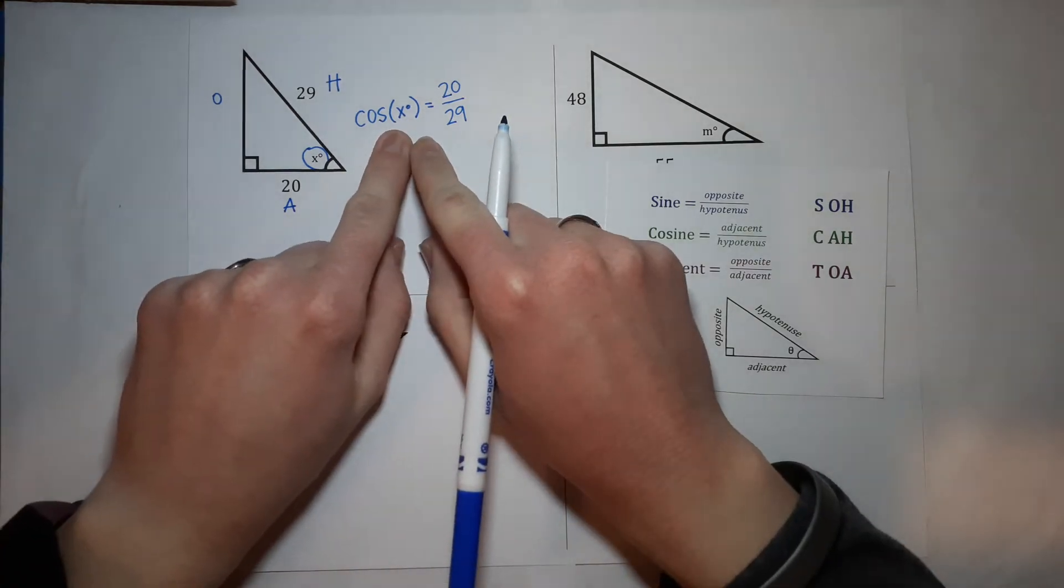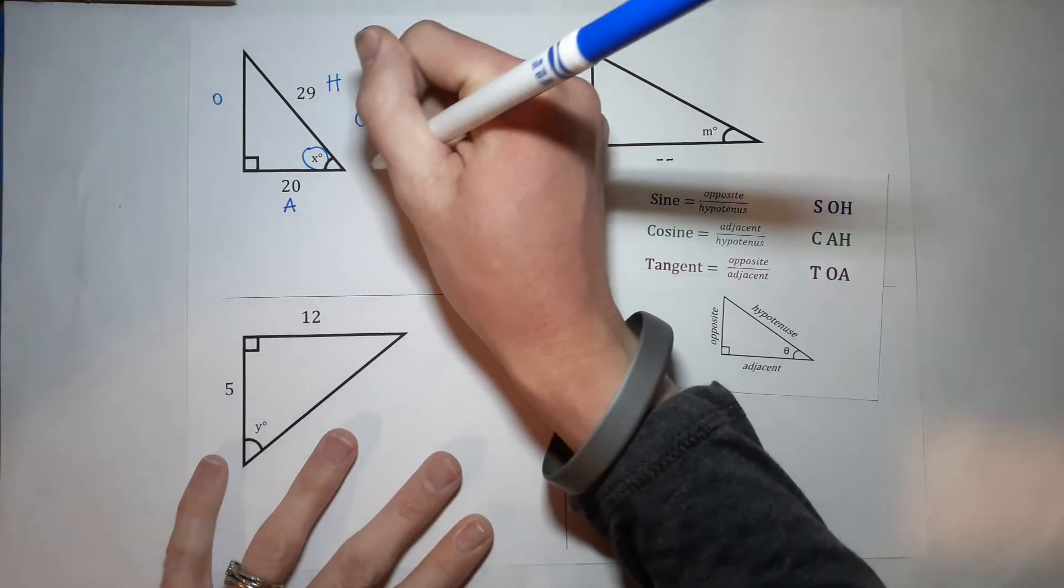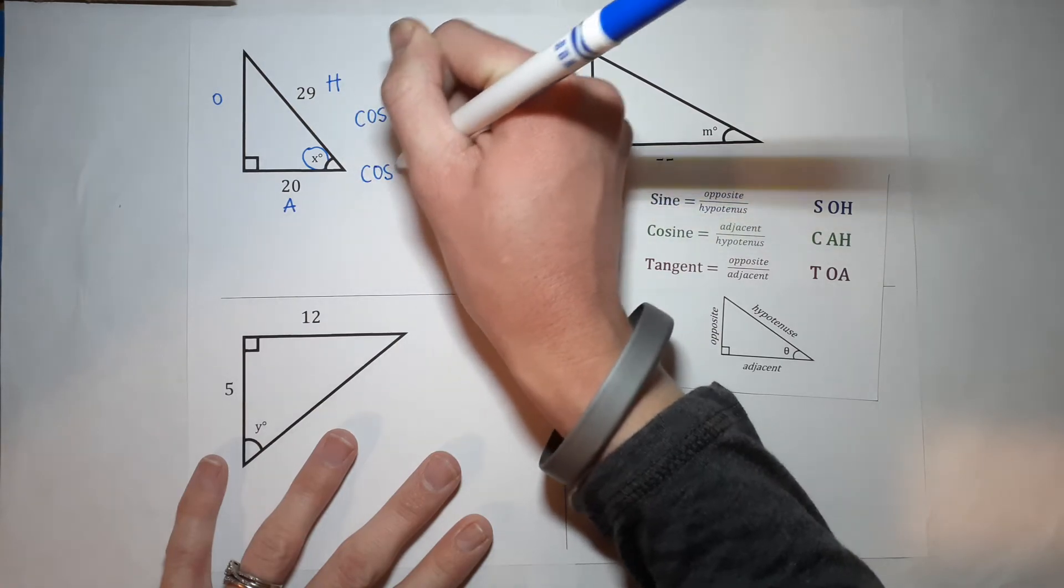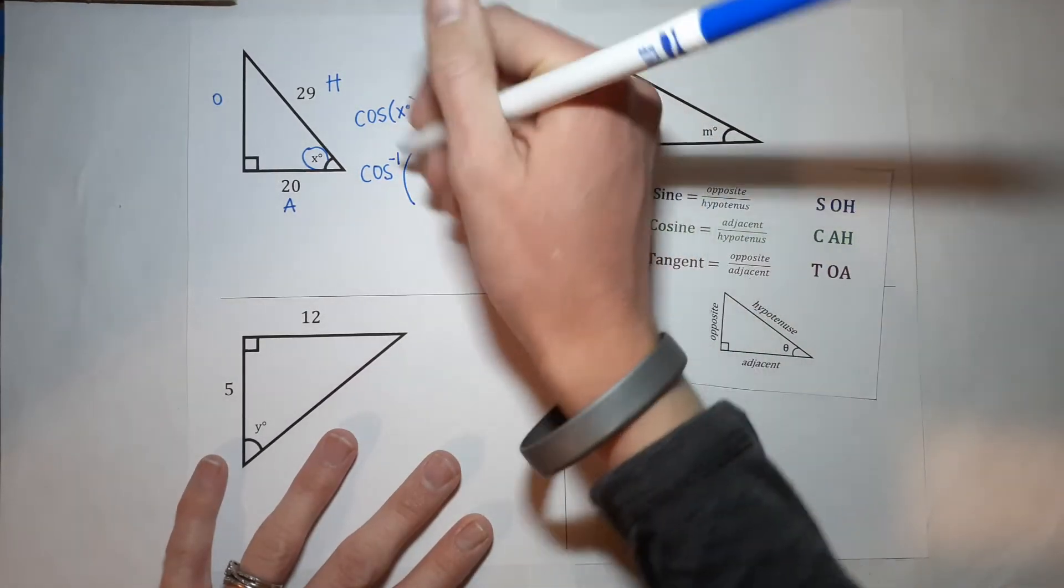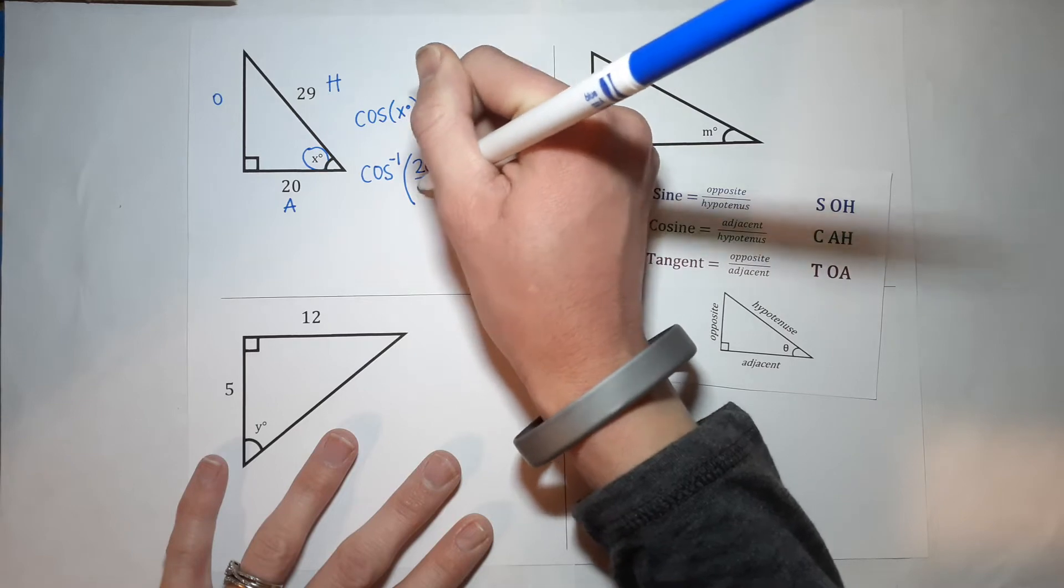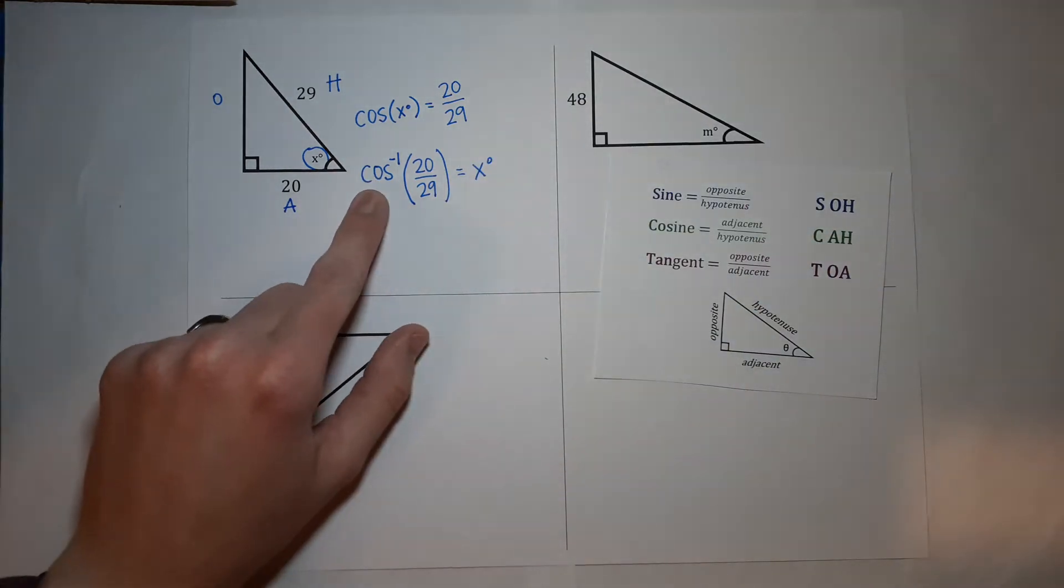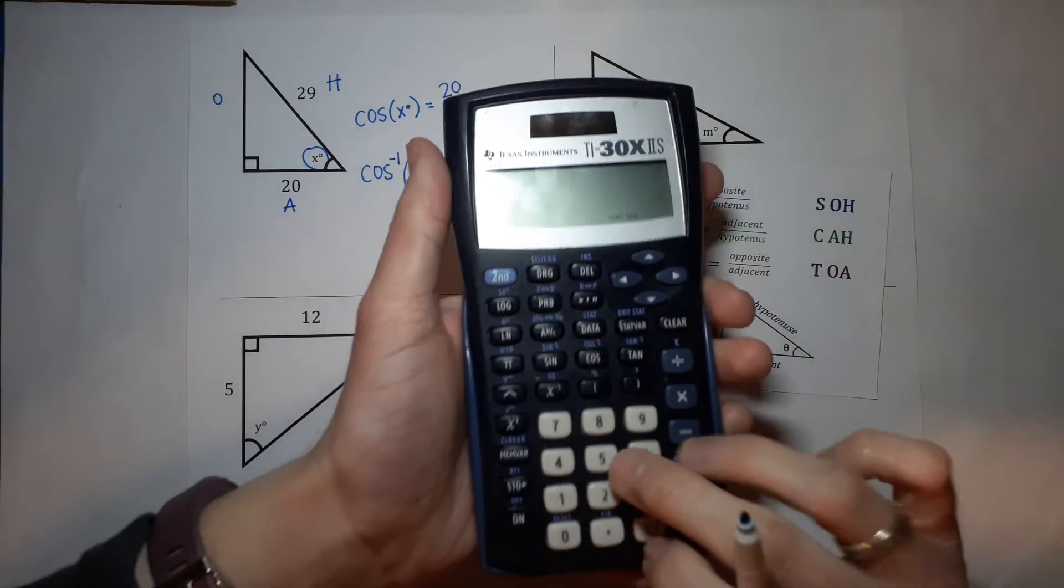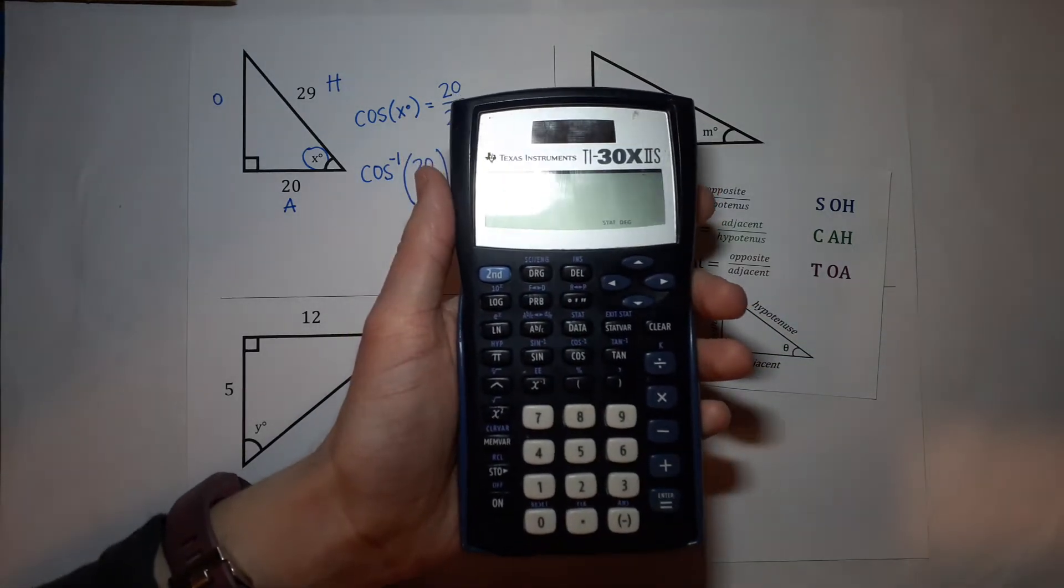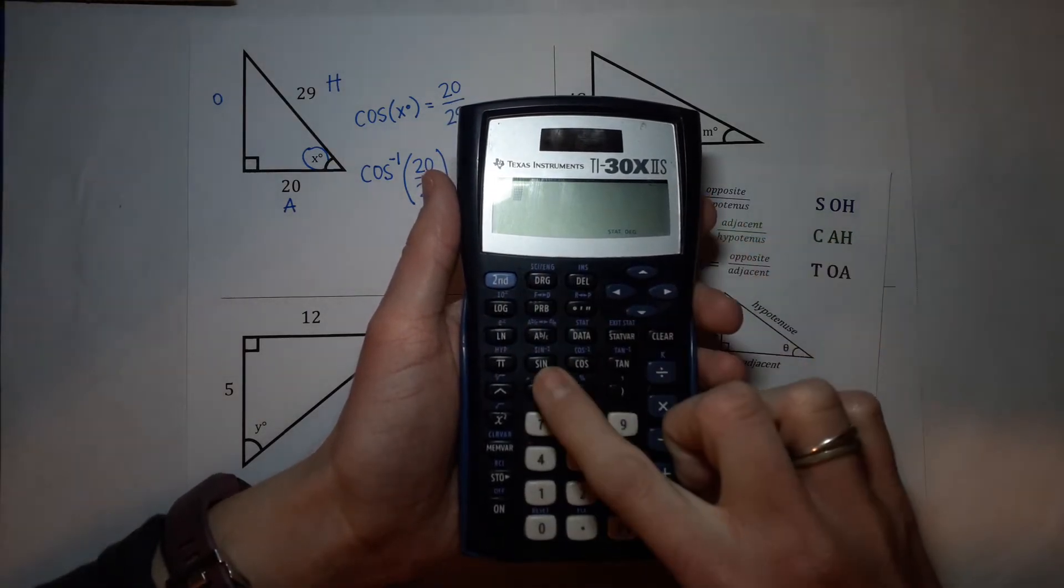When we want to find the angle, we use what we call the inverse cosine. What does that look like? It looks like this: the cosine and we put a cute little negative one up there. And then we put our ratio 20 over 29 equals that x. So basically what this says is, this is the cosine, what's the angle when you use the inverse? Now you might be like, is that on my calculator? Well, if you have sine, cosine, and tangent on your calculator, it should be there. A lot of calculators, you use the second button, and then push whichever one you need.